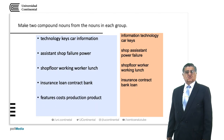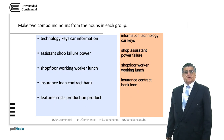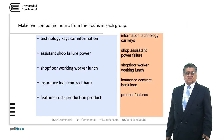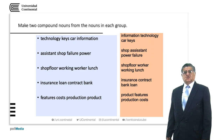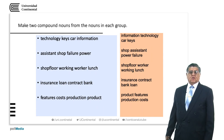Features, cost, production, product: 'product features' — the characteristics a product has. 'Production costs' — the cost or costs a production has.